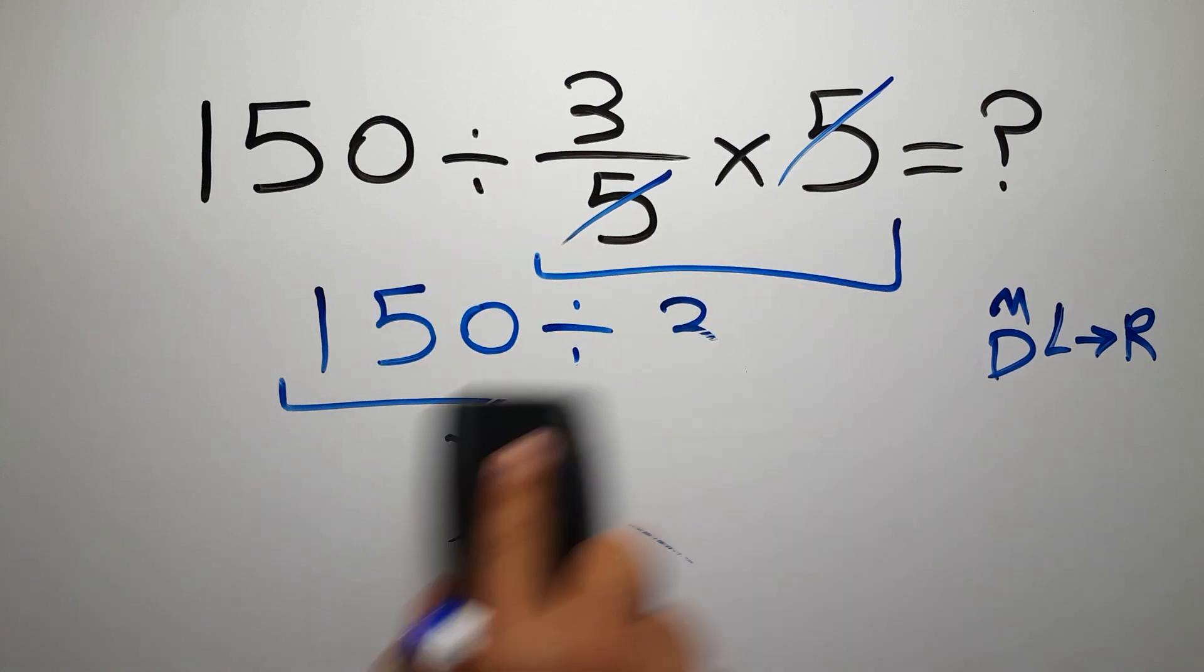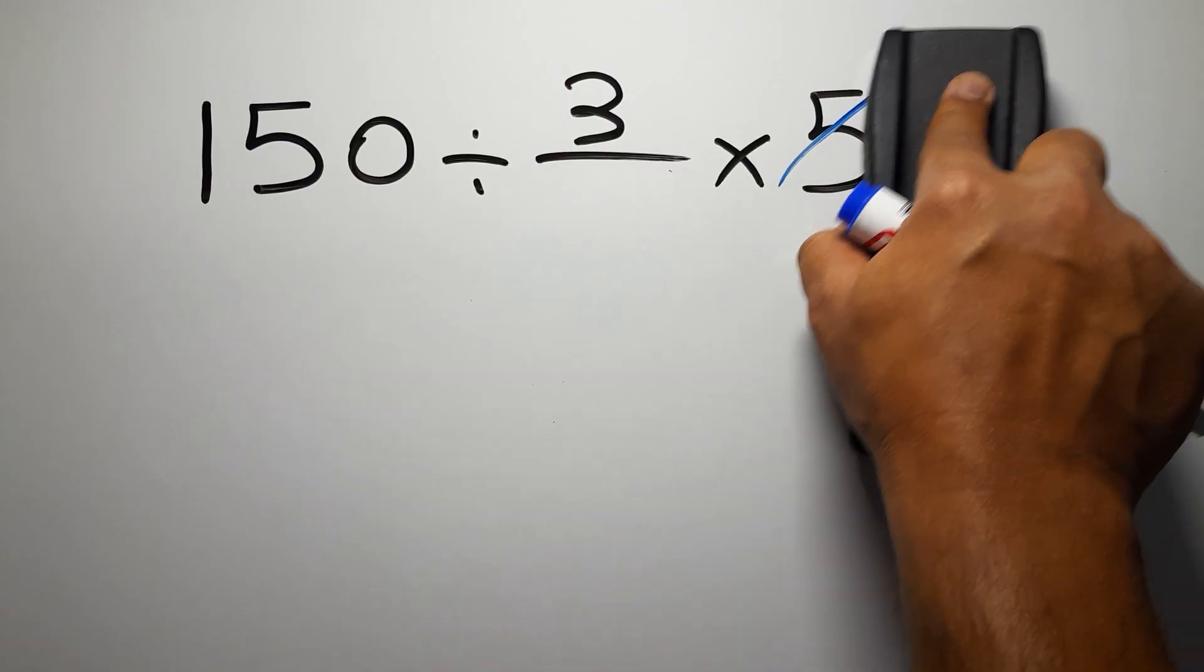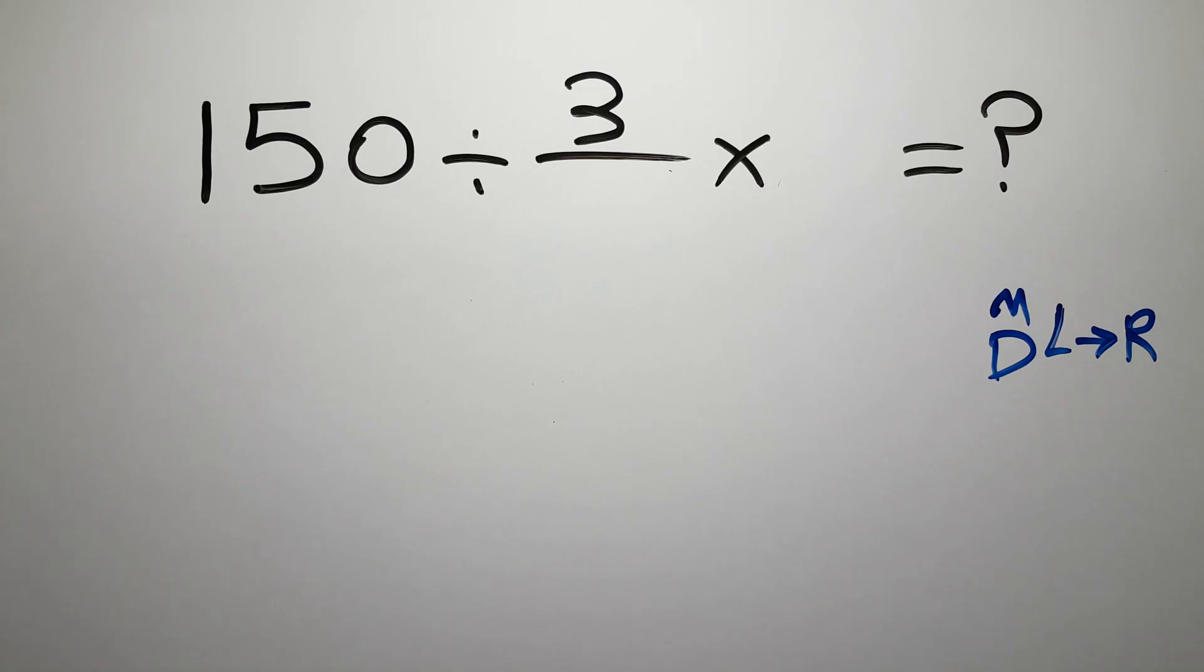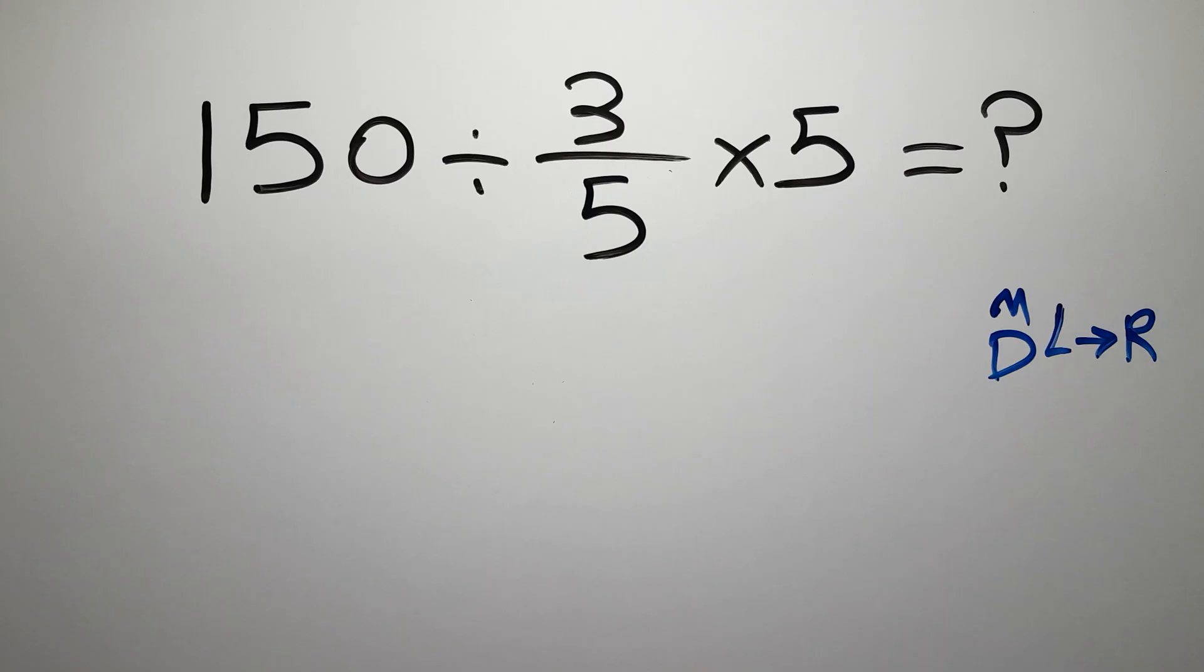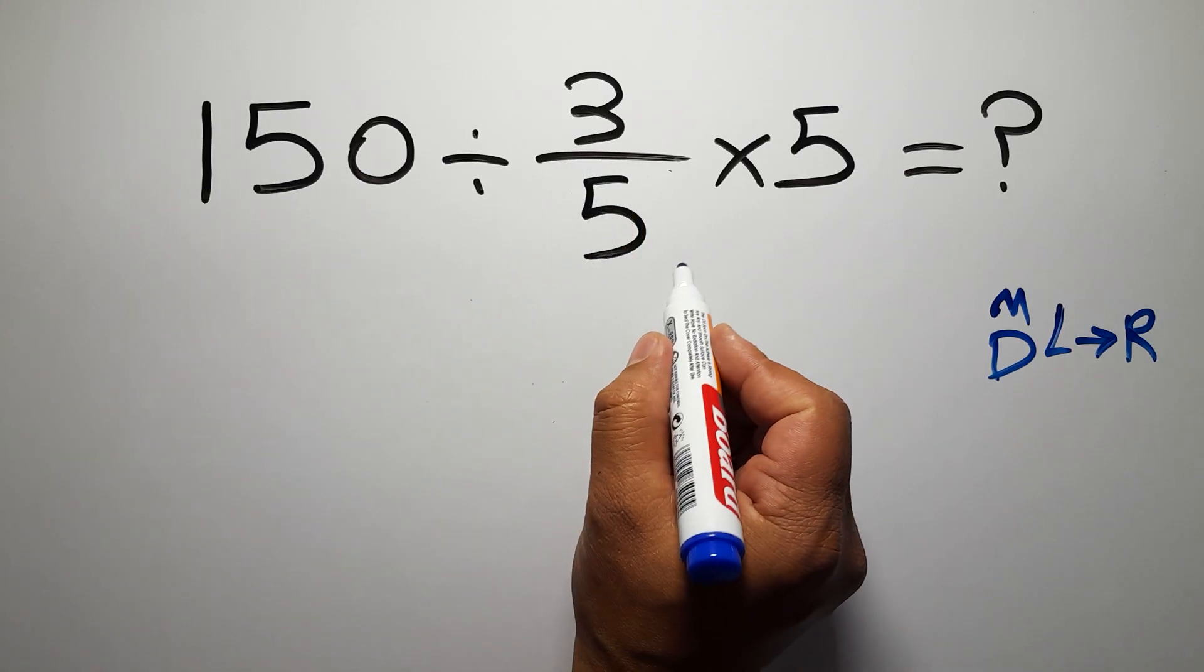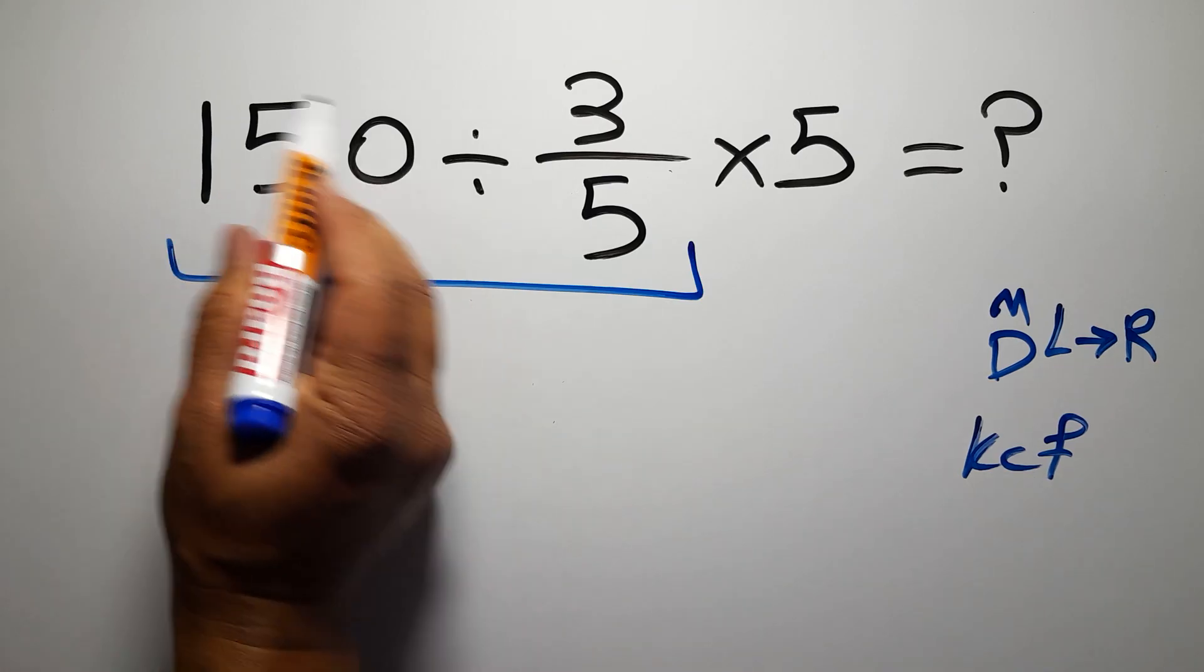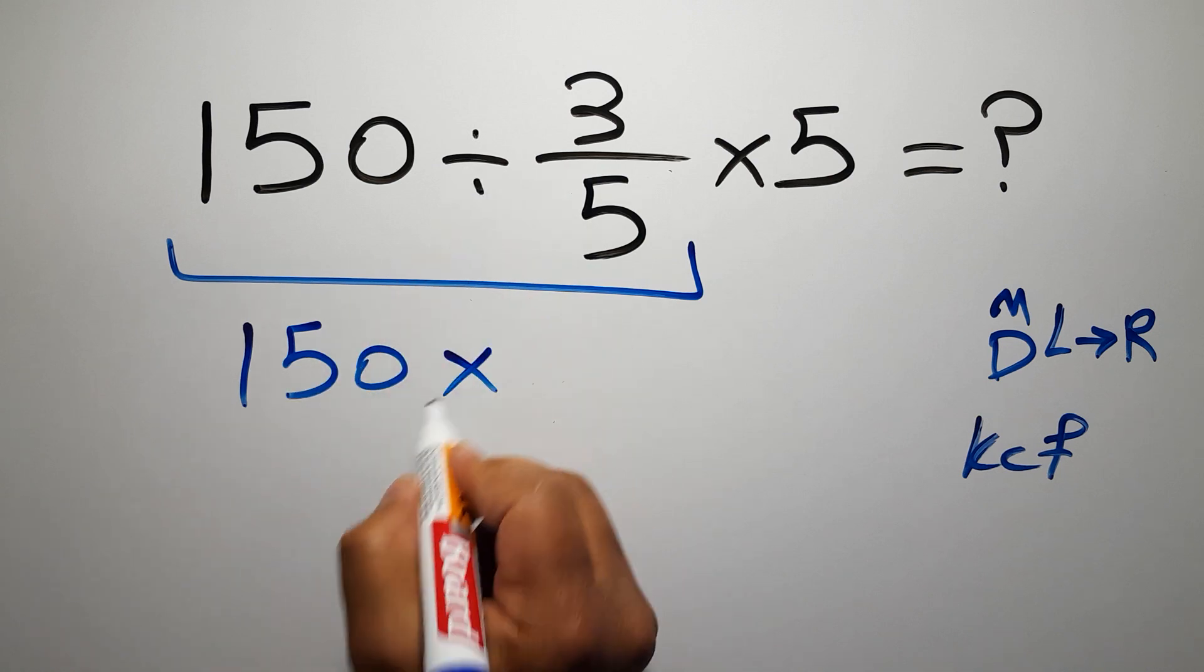So first, 150 divided by 3 over 5. According to the KCF rule, K stands for Keep, C stands for Change, and F stands for Flip. We can write: keep the first fraction, change division to multiplication, and flip the second fraction, and times 5.